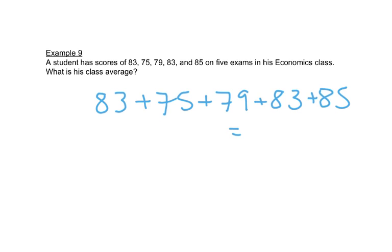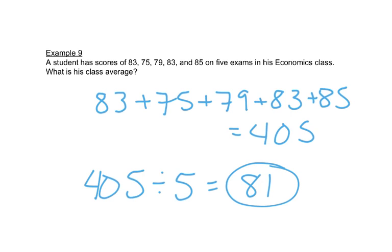So we add 83 plus 75 plus 79 plus 83 plus 85. We get 405. There's 5 exams, 5 test scores, so we'll take 405 and we'll divide by 5. And we get 81. This is class average.